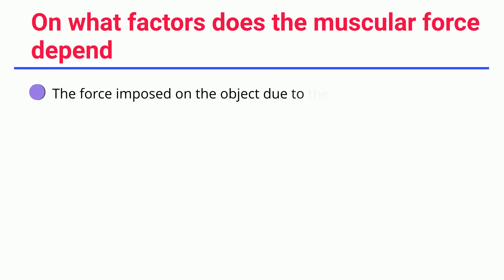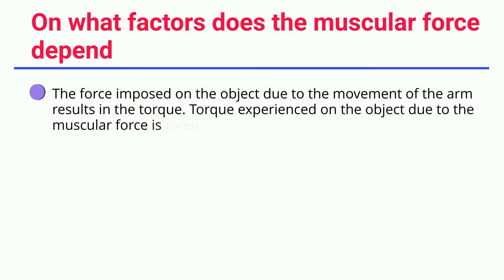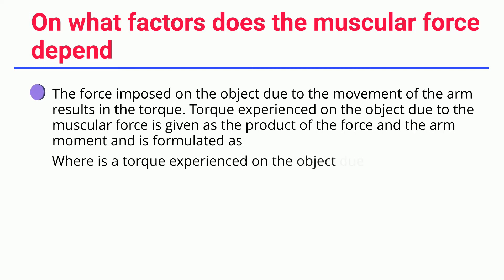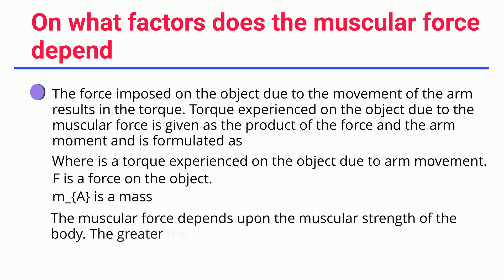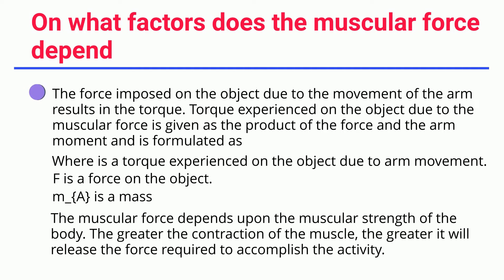The force imposed on an object due to the movement of the arm results in torque. Torque experienced on the object due to muscular force is given as the product of the force and the arm moment. The muscular force depends upon the muscular strength of the body — the greater the contraction of the muscle, the greater the force released to accomplish the activity.